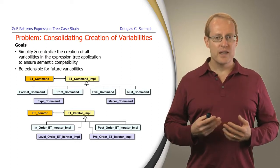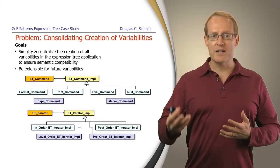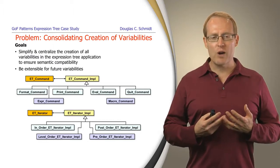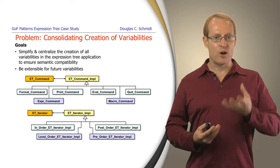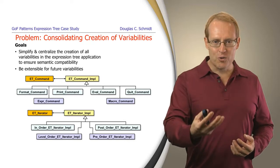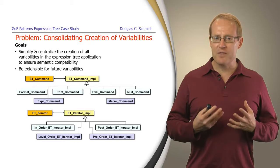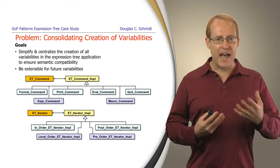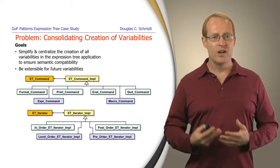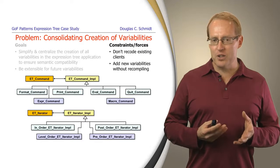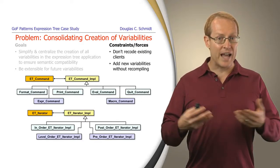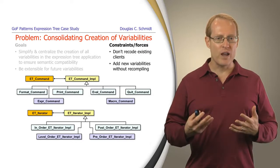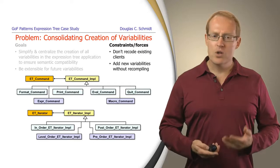The next topic is related to what we just talked about with commands, but generalizes beyond that. When you start creating many different kinds of related subclasses — like our command implementer hierarchy or our hierarchy of iterators for various traversal orders — you have to think carefully about how you're going to create these things and make it easy to add new capabilities in the future. We'd like to do it without having to recode existing clients as we add new things, and potentially without recompiling existing clients or breaking binary compatibility.